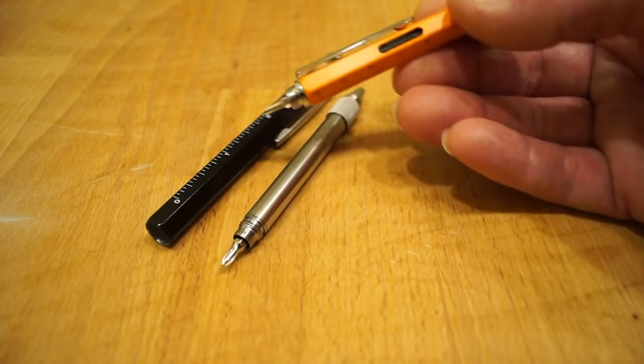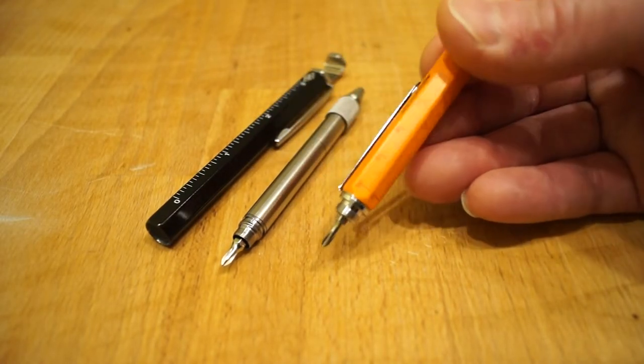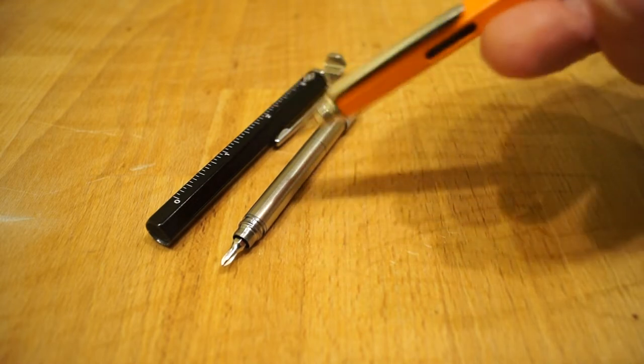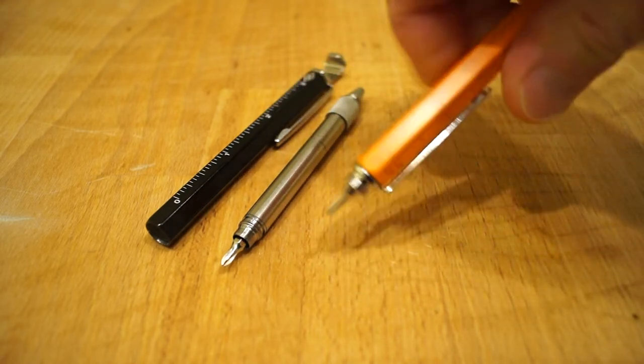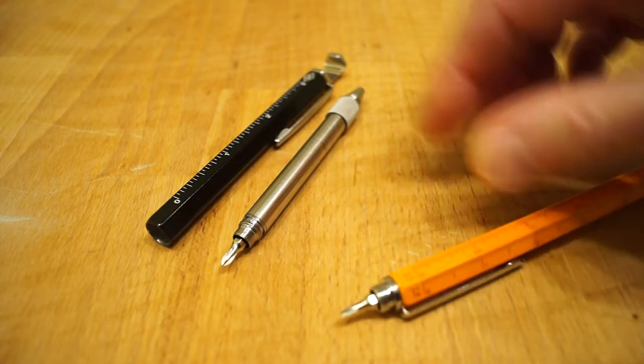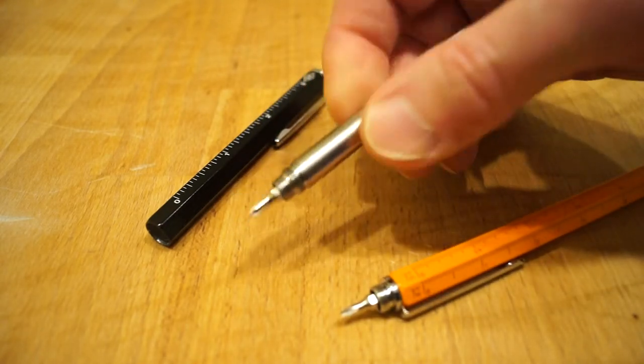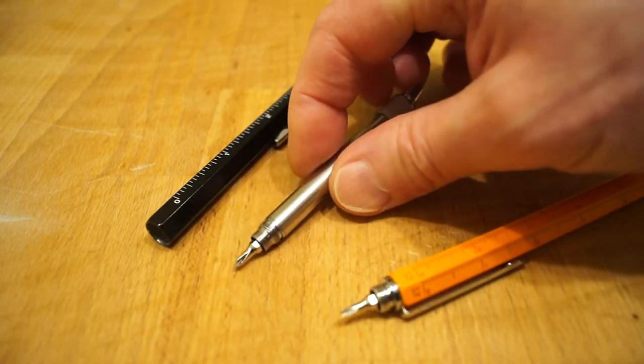So basically if you could mount this into here so it was like this, you'd be able to get a lot more leverage on the screw because you've got the nice flats to get hold of, where this is just round and you can't really get much of a grip of it to be honest with you.